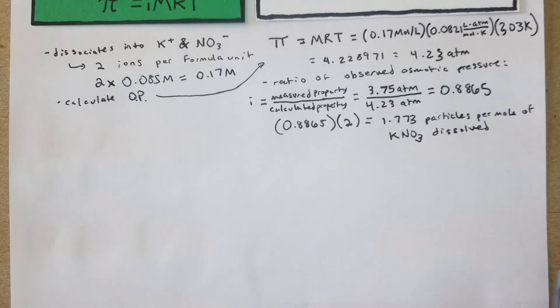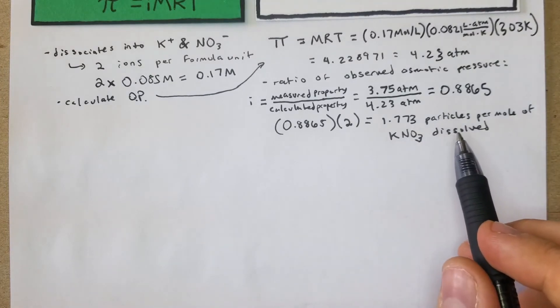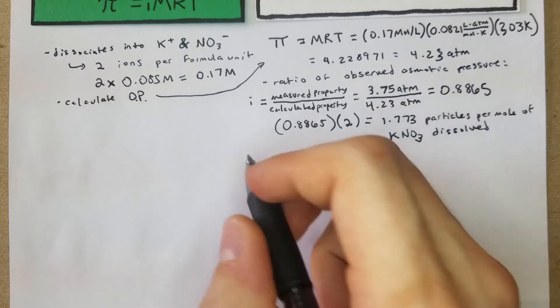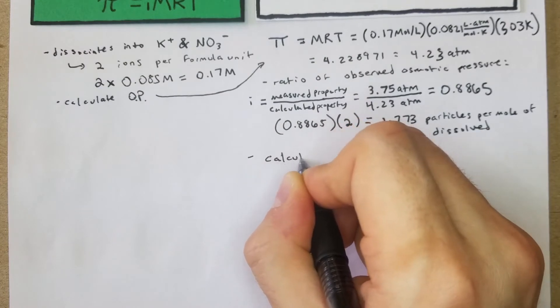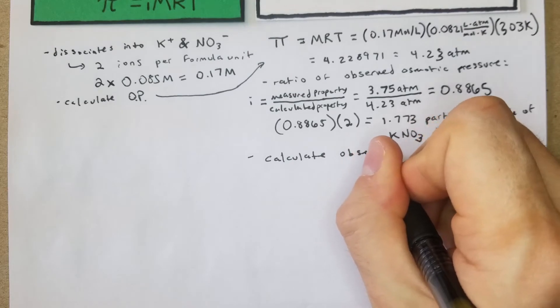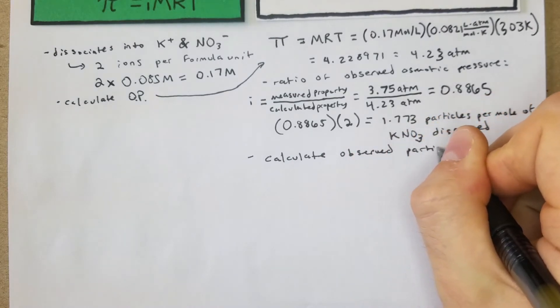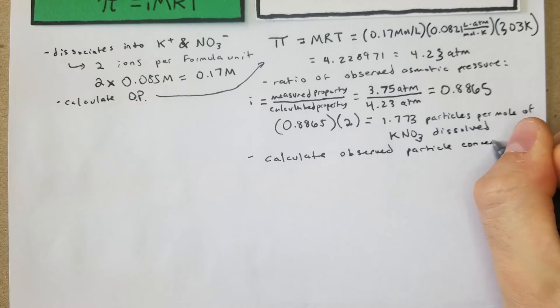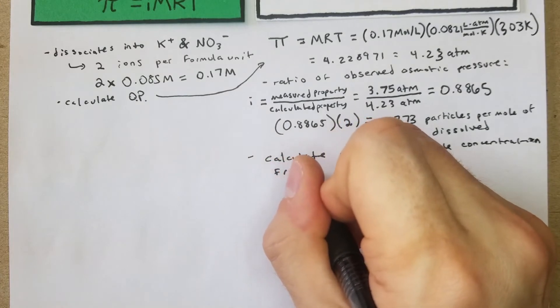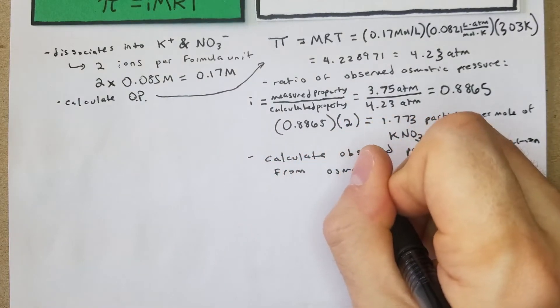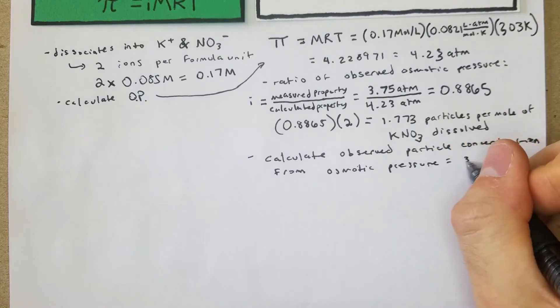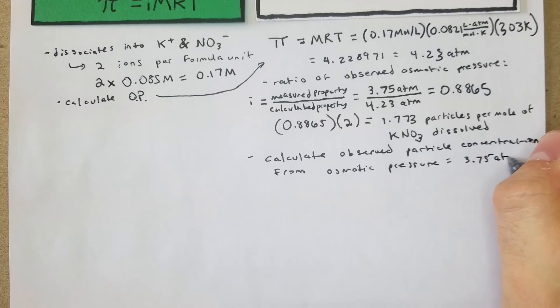We have 1.773 particles per mole of KNO3 dissolved. So now what we're going to do is we're going to calculate the observed particle concentration from osmotic pressure, which will be 3.75 atm based on what they gave us.